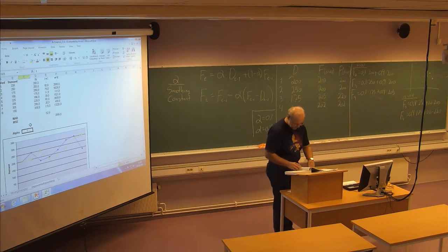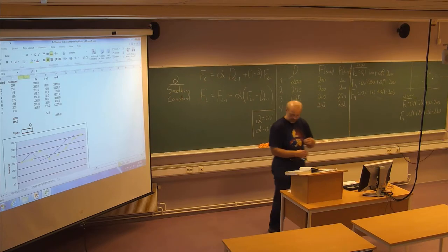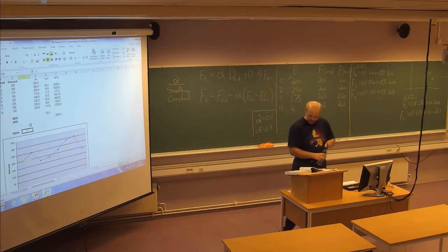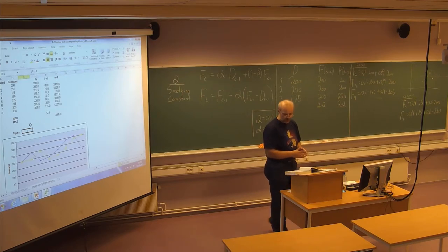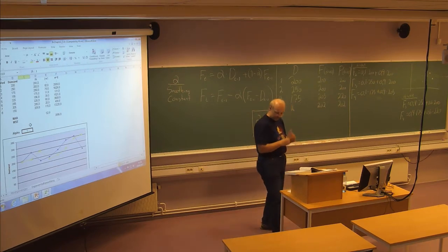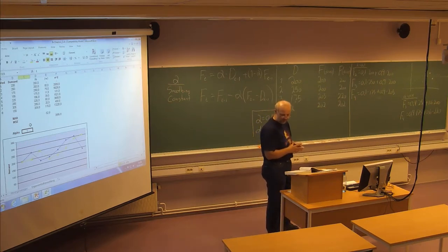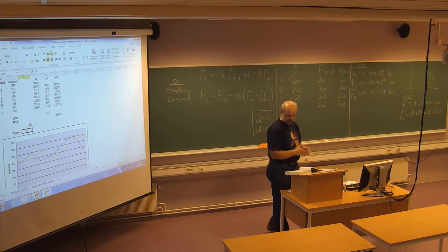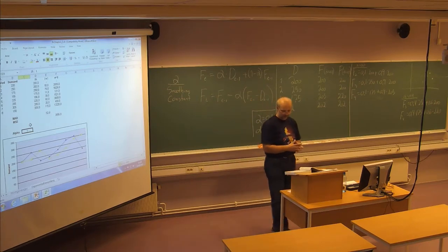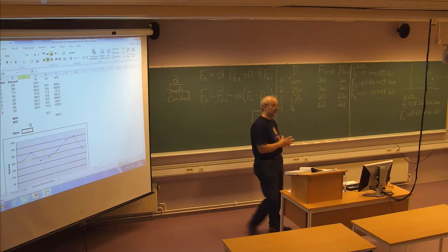On page 73, we are observing weekly sales of a ball-peen hammer at the town hardware store over an eight-week period. We have eight data points: 14, 9, 30, 22, 34, 12, 19, and 23. Problem A: use the moving average to forecast sales, determining the one-step-ahead forecast for weeks four through eight, using a three-week moving average (n = 3).